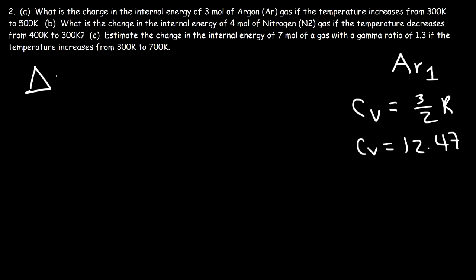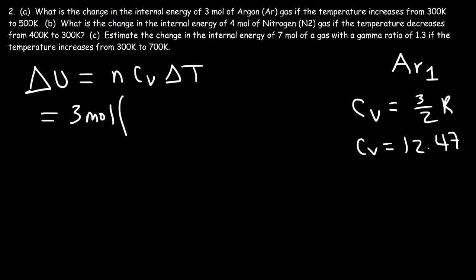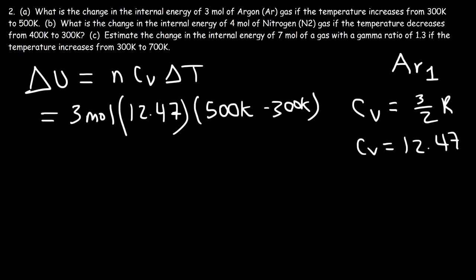To calculate the change in internal energy, the formula is N times Cv times delta T. We have 3 moles of argon gas and Cv is 12.47 joules per mole per Kelvin. The change in temperature is final minus initial: 500 Kelvin minus 300 Kelvin equals 200 Kelvin. So it's 200 times 3 times 12.47, giving a change in internal energy of positive 7,482 joules.